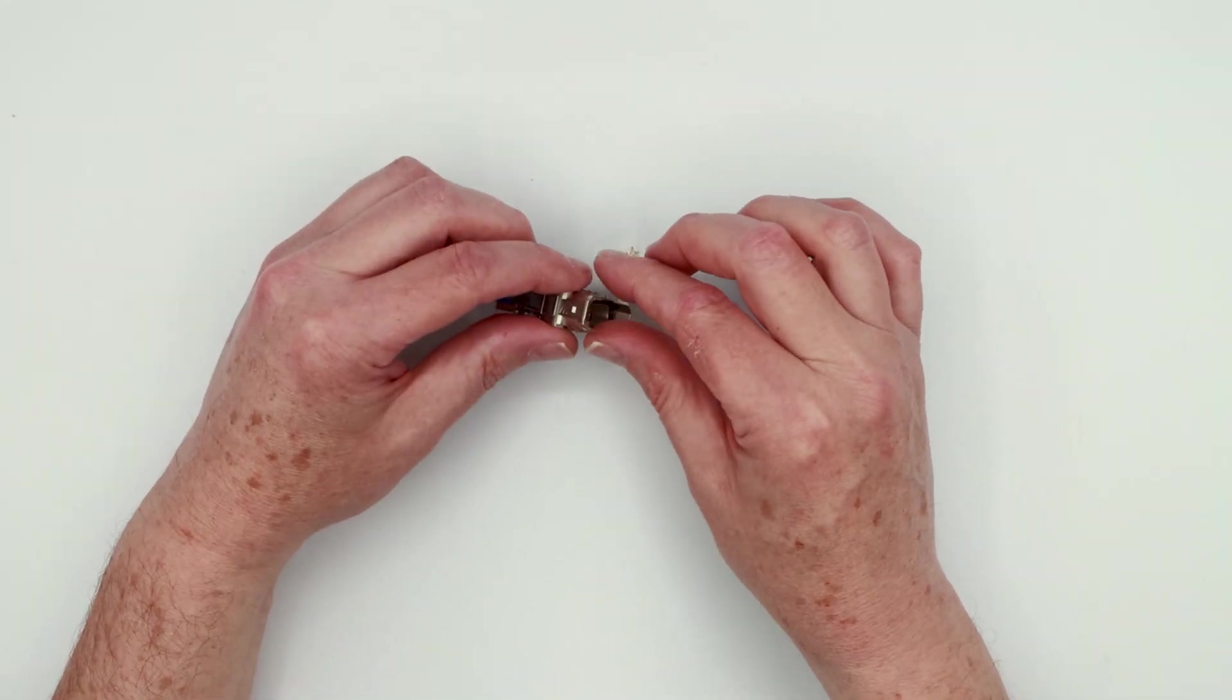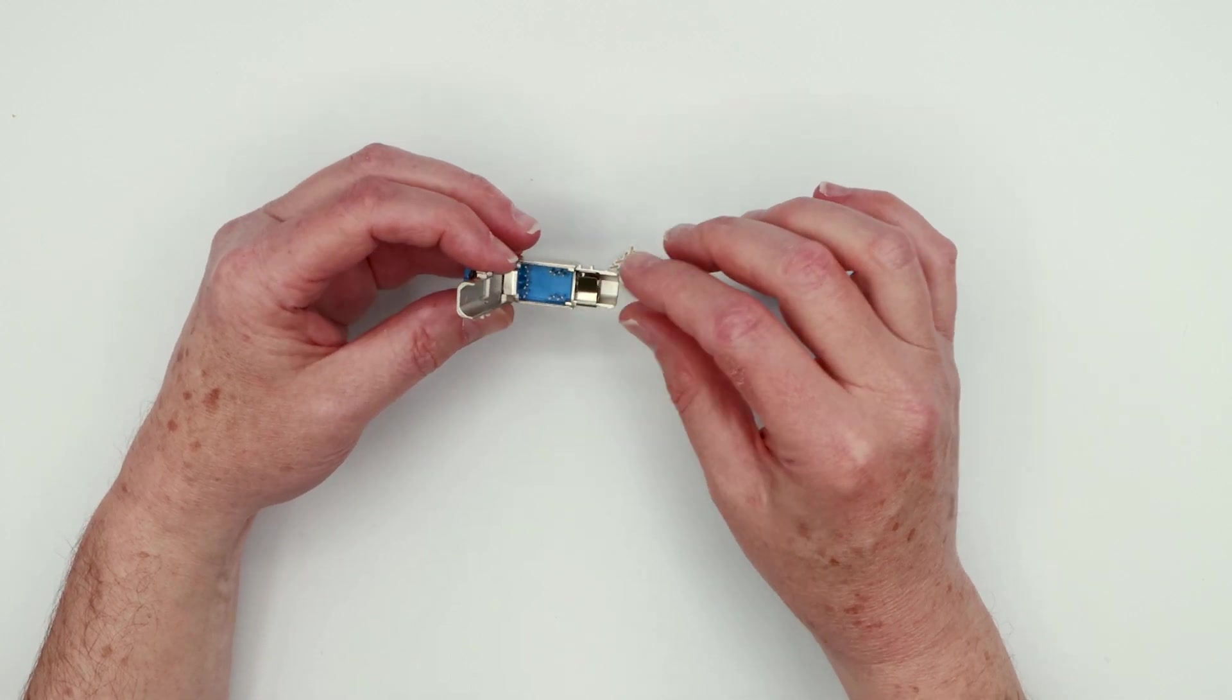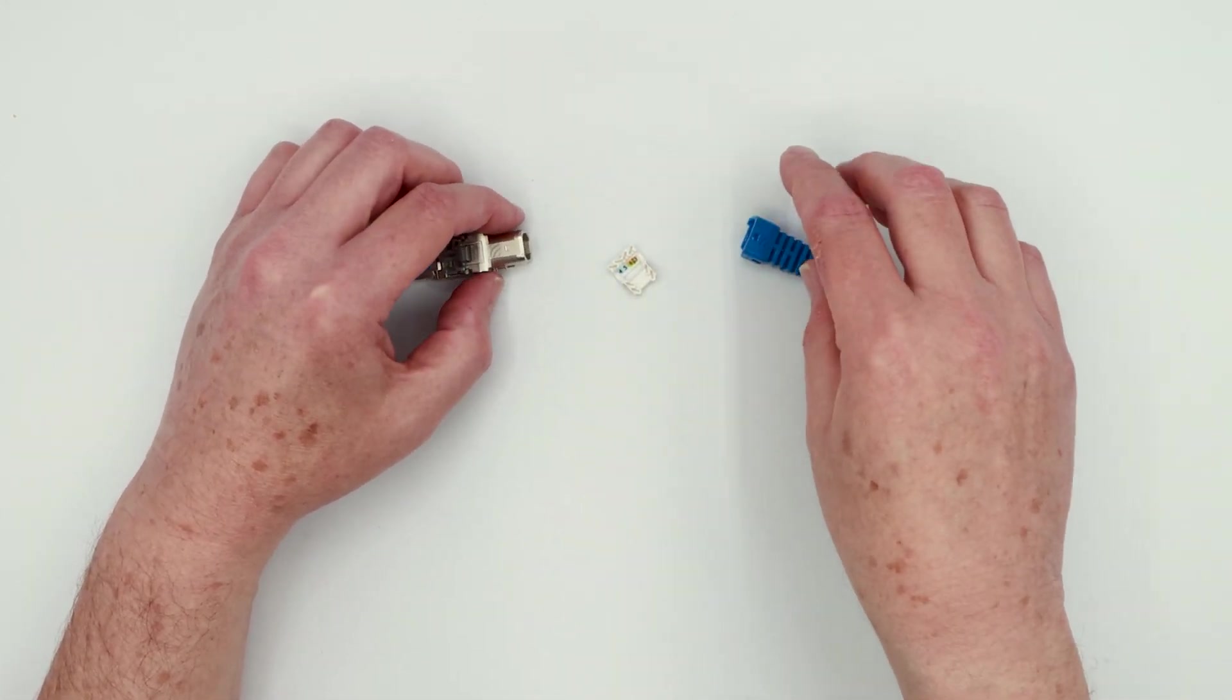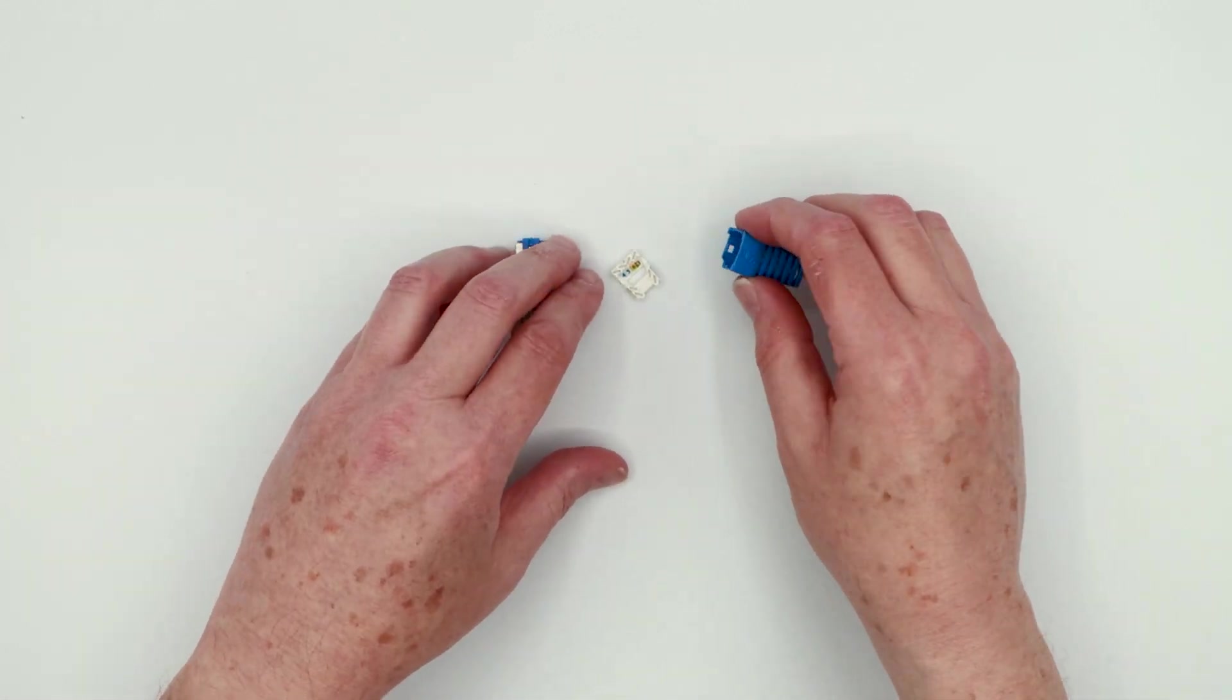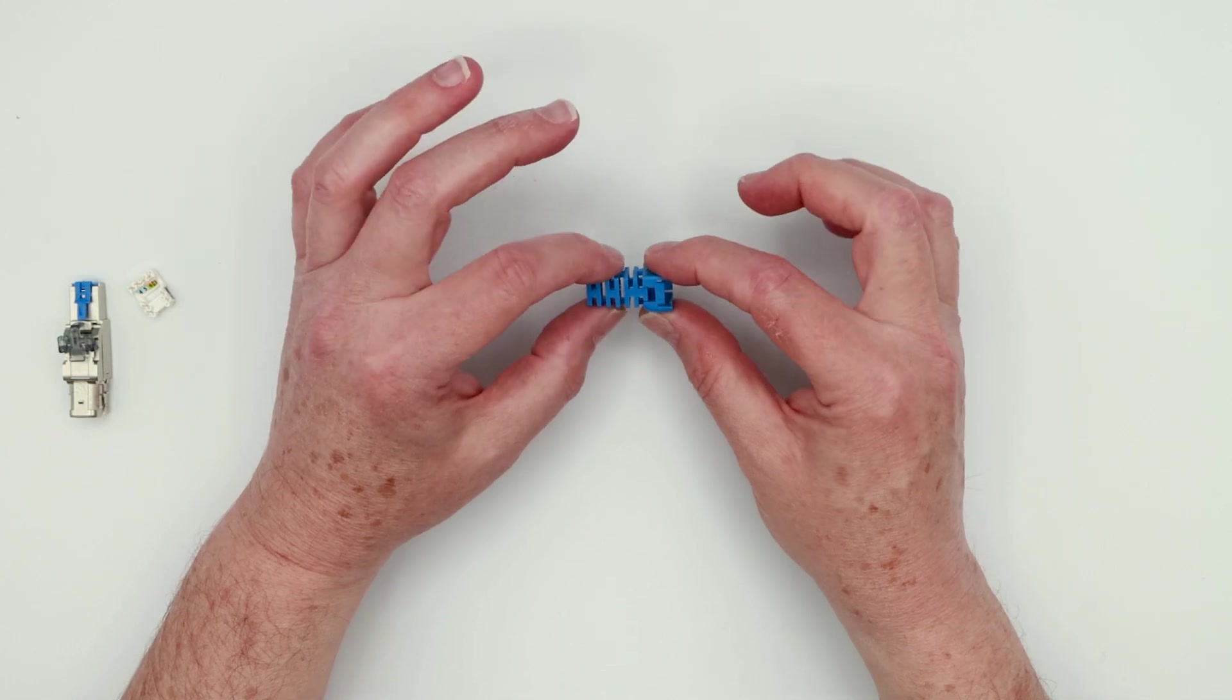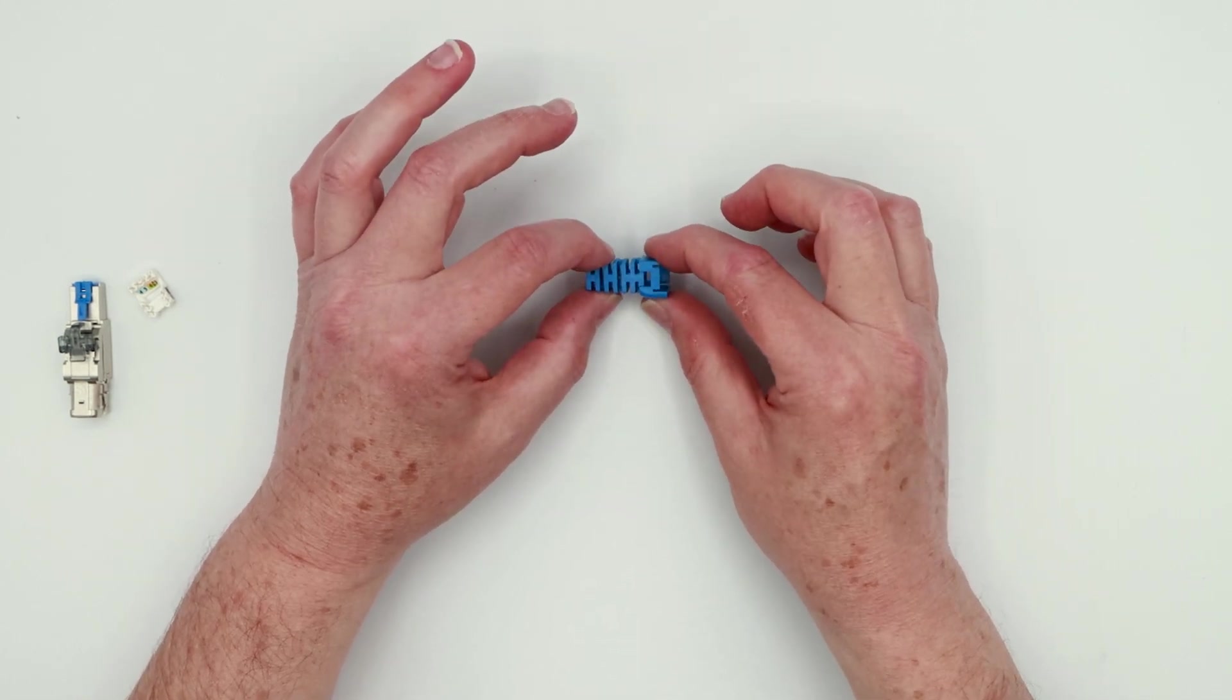All right. So with the anatomy of the field termination plug out of the way, we're going to go ahead and actually strip a cable. And I'm going to show you how to get this all working. So the first thing, though, is you've got to work with this strain relief boot. That has to be cut down and put onto the cable first.